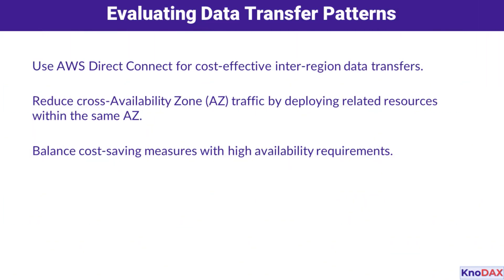One key area to examine is data transfer patterns. For inter-region data transfers, AWS Direct Connect can be a cost-effective option. To reduce cross-availability zone traffic, place related resources within the same AZ where possible. Of course, balancing these cost-saving measures with high availability requirements is critical to maintaining reliability.